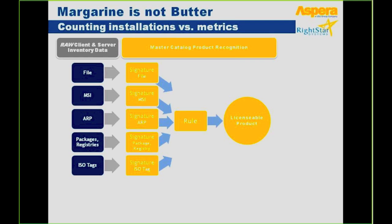Before we start with how ITSM processes can integrate with SAM processes, I would like to set the stage and outline some of the complexities you find when managing software from a licensing and compliance standpoint. On the left-hand side, you see the data needed to populate your inventories — the technical data for your software inventory. It starts with file information, MSI information, add/remove program keys, package names, AD software group names, or even ISO-TAC. This is helpful information when you sit on the ITSM side of the fence, but when you sit on the SAM side and want to do compliance, this is not helpful. It needs to be translated, and this translation is done on the back of a catalog, such as what Sparrow has to offer.